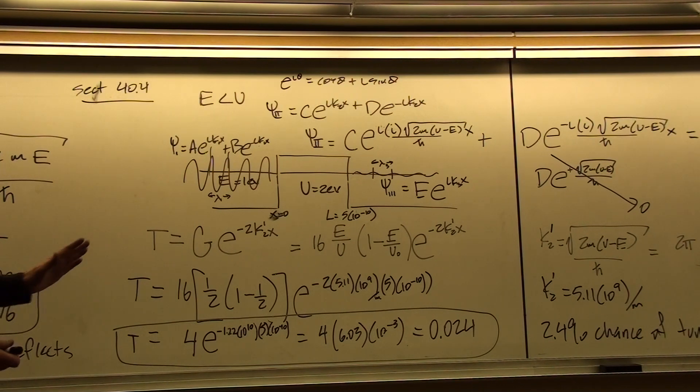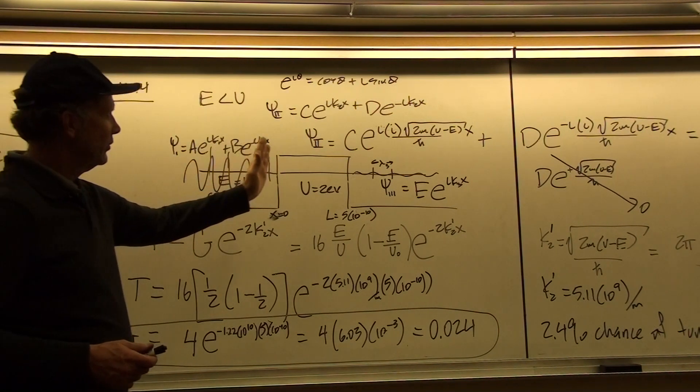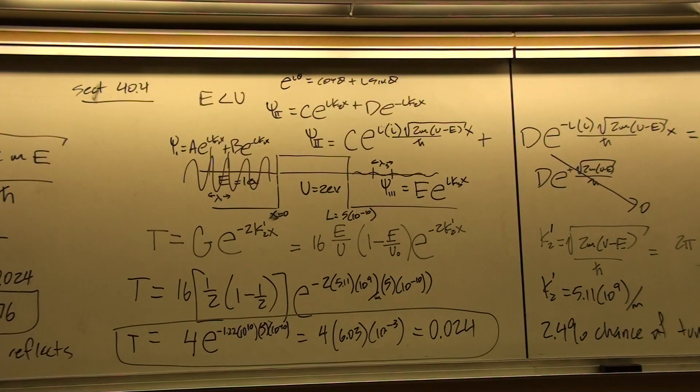the electron will be found in this reflection region. And only 2.4% of the time will the electron be found in region 3.